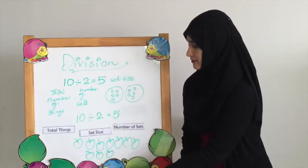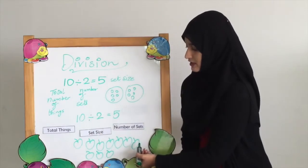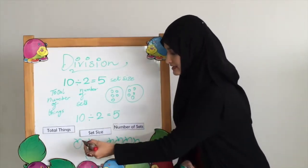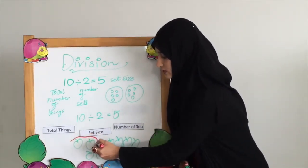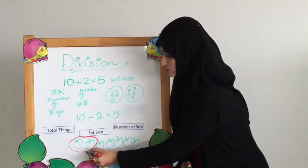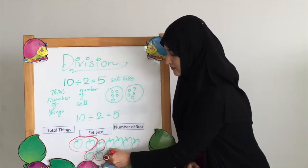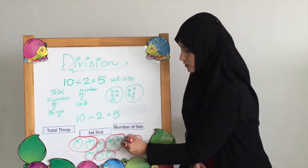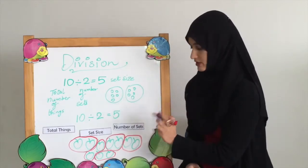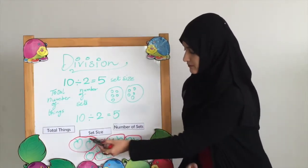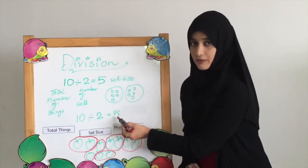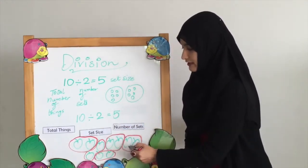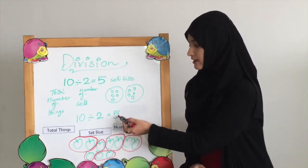10 divided by 2 equals 5. We have 10 apples here. 2 is the set size, so we are going to count 2 apples and make a set. We keep on drawing sets, making sure that the set size is 2, which means in each set there should be 2 objects. To find out the answer, we count how many sets we have: 1, 2, 3, 4, 5. We have 5 sets and our answer is 5.